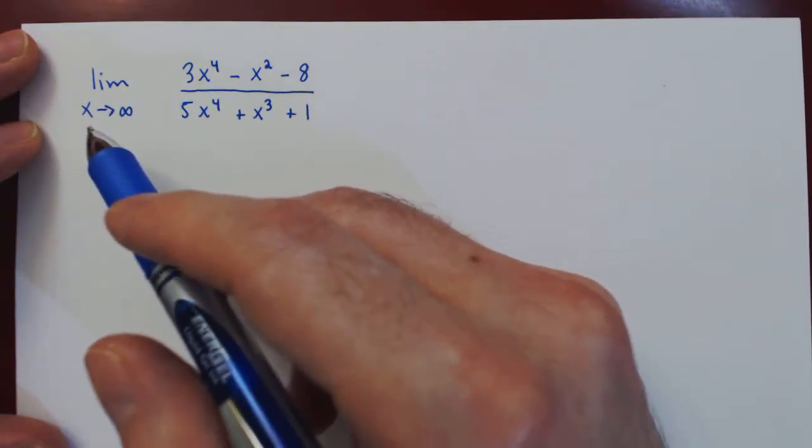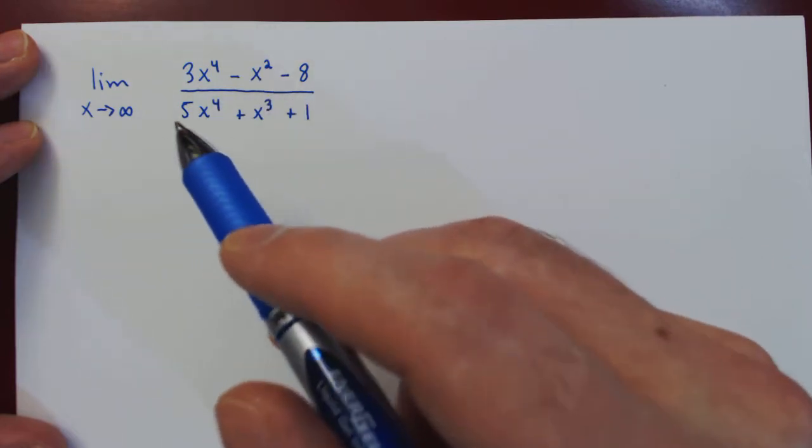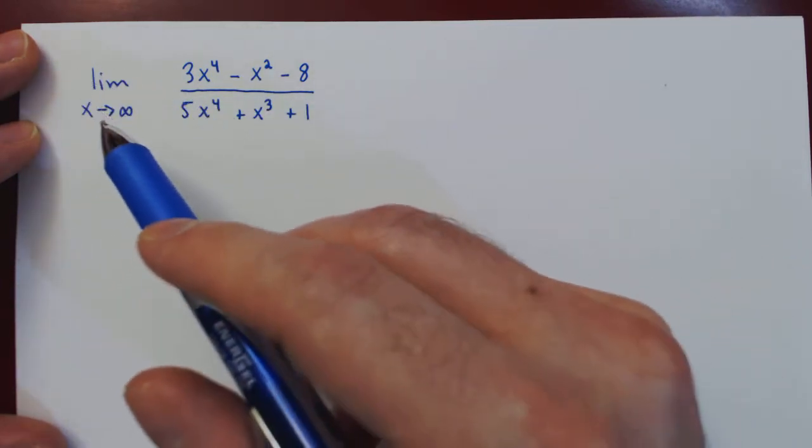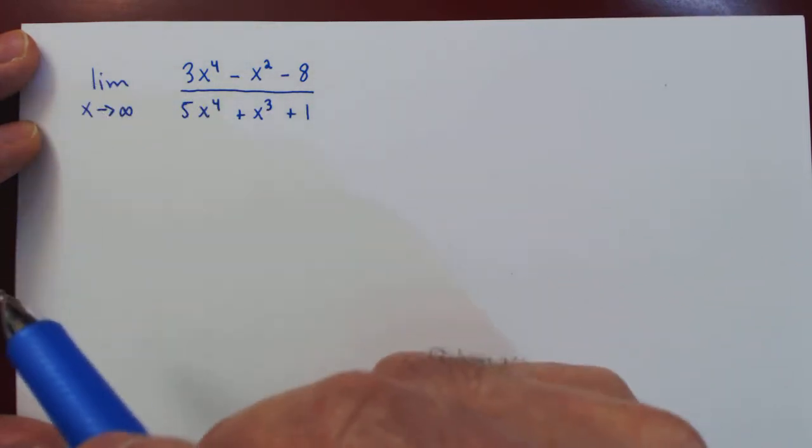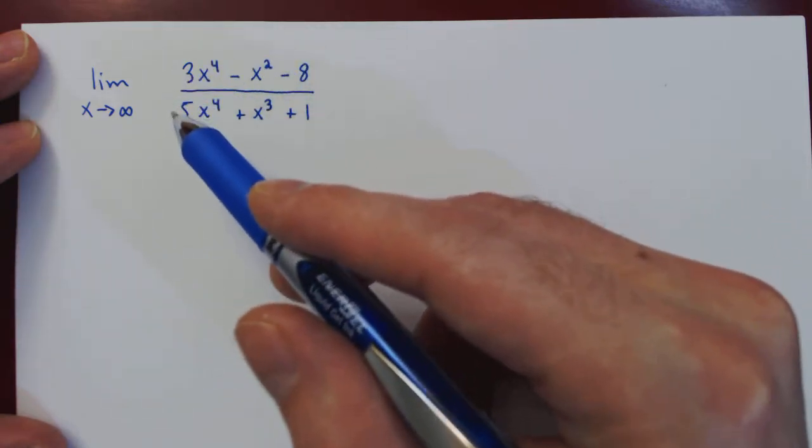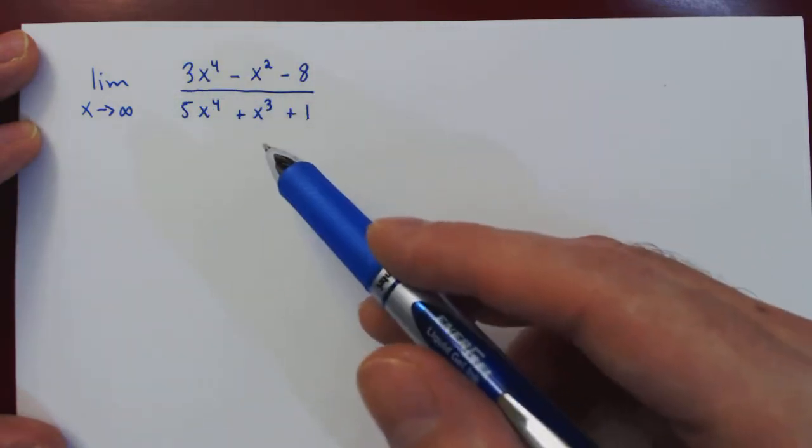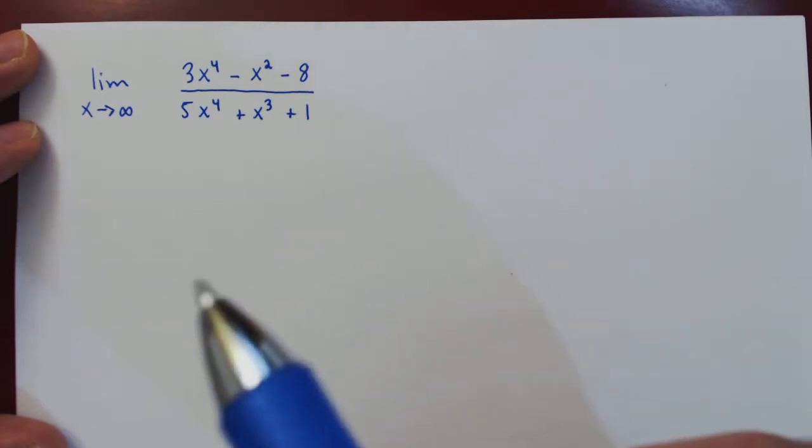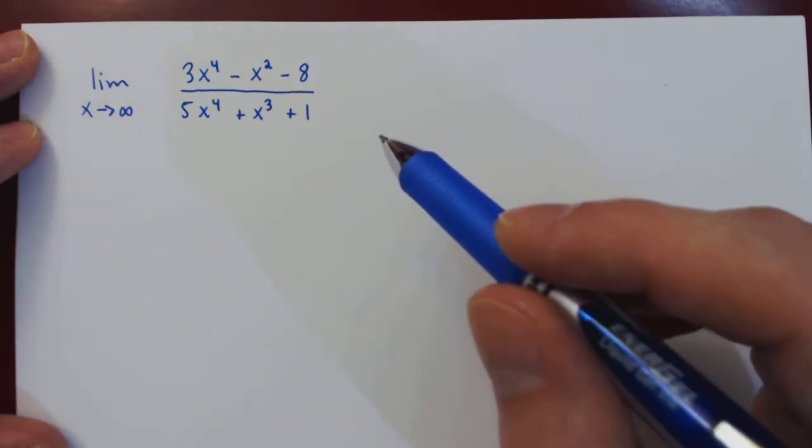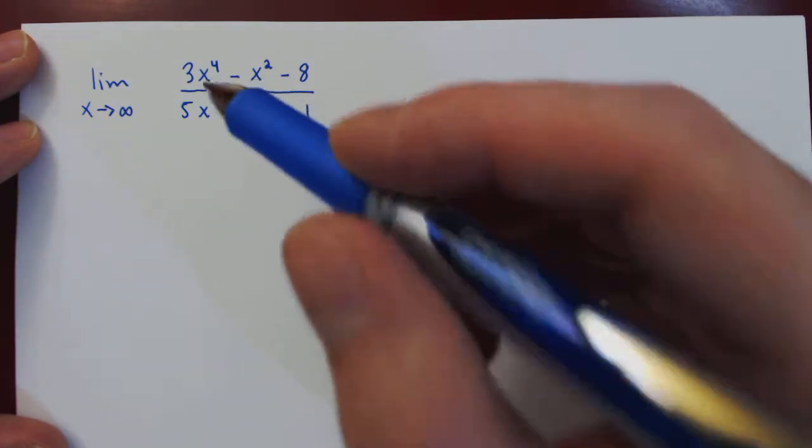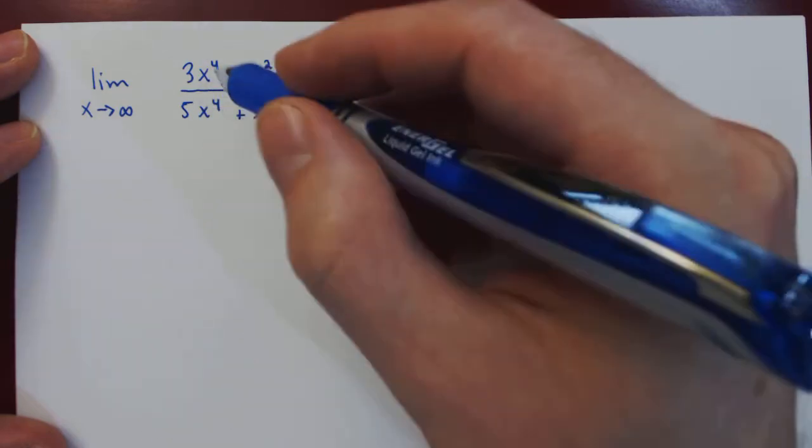In this video, we will find the following limit. When we have a limit as x goes to positive or negative infinity, and in the expression there are only powers of x, the only power that really matters, that drives the limit, is the largest power of x.